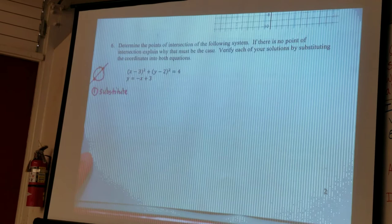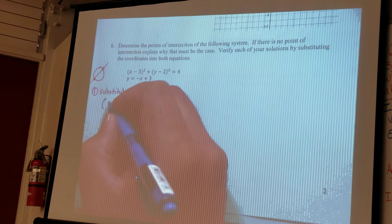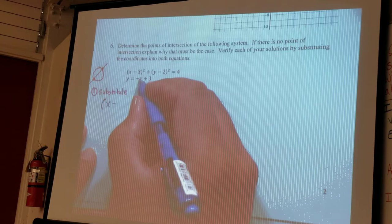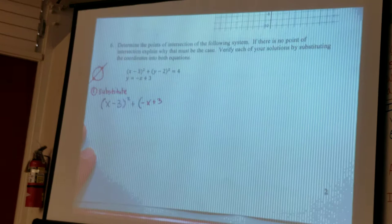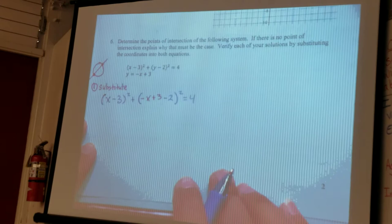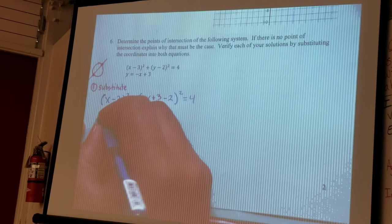Okay, and we'll do that by setting up x minus, oh wait, x minus 3 squared plus, and then we'll sub in the y, which is negative x plus 3. Okay, so we've subbed in y, then after that we'll simplify. So this becomes, this stays the same, this now becomes negative x plus 1 squared equals 4.